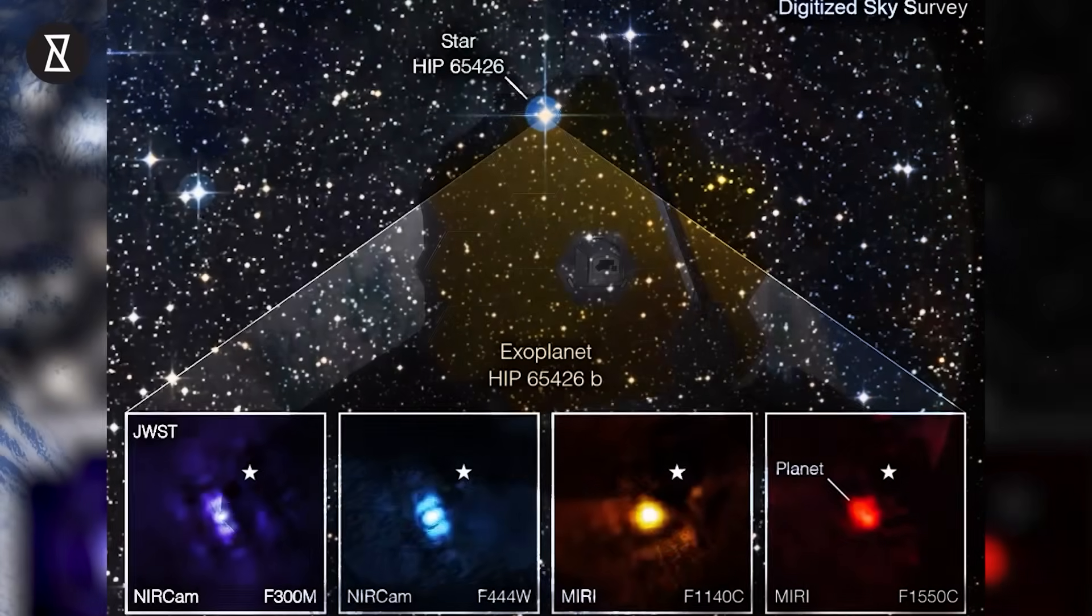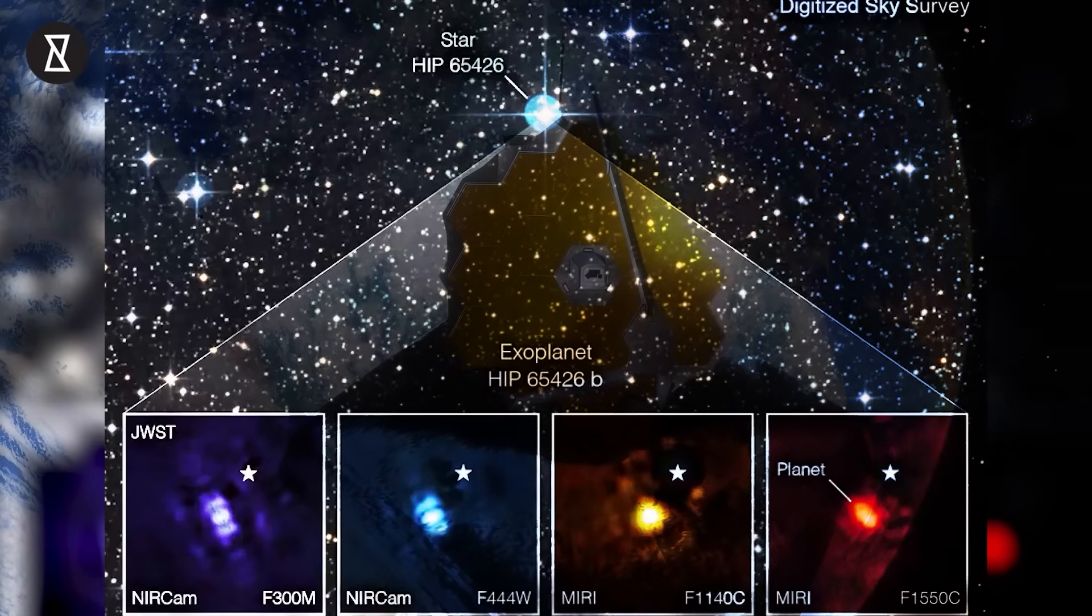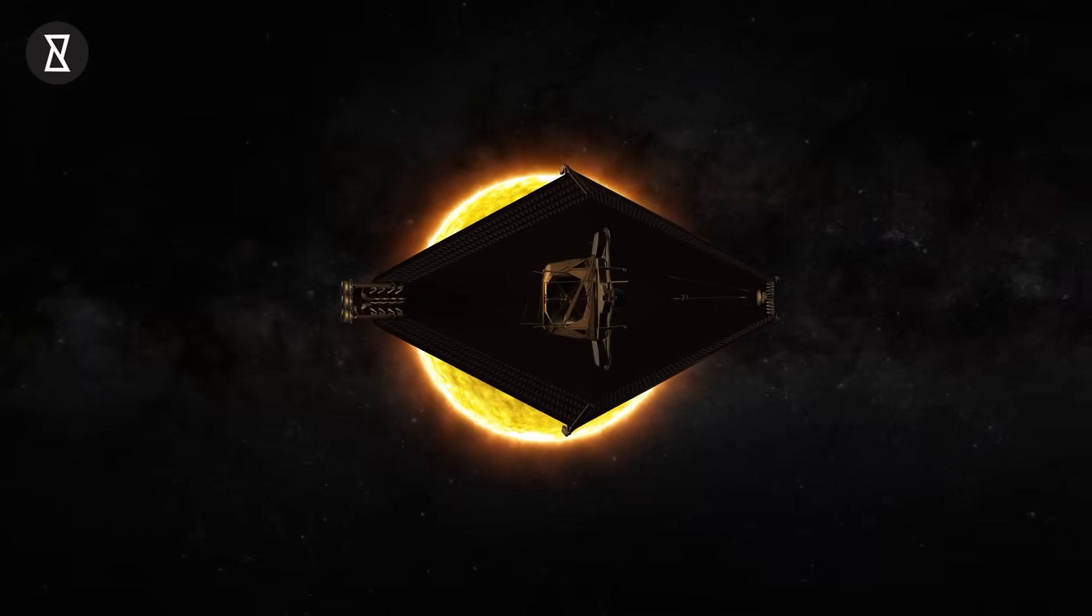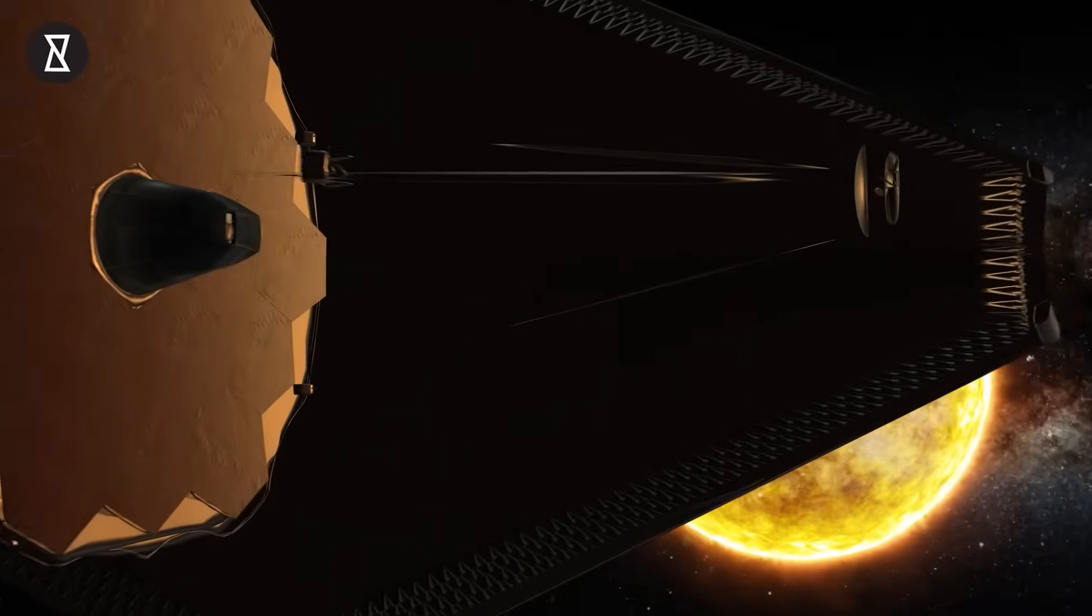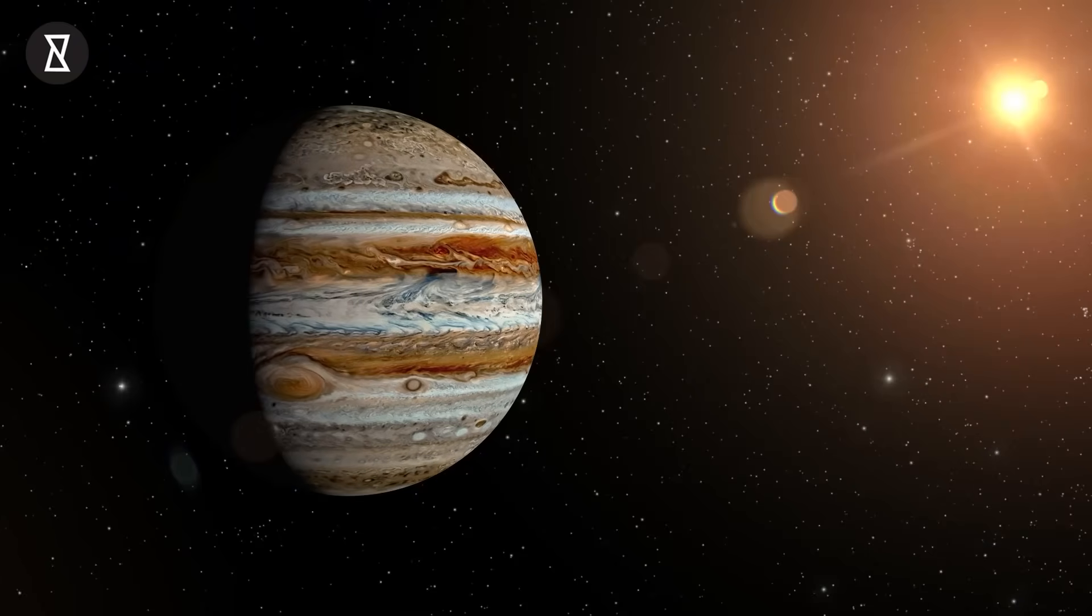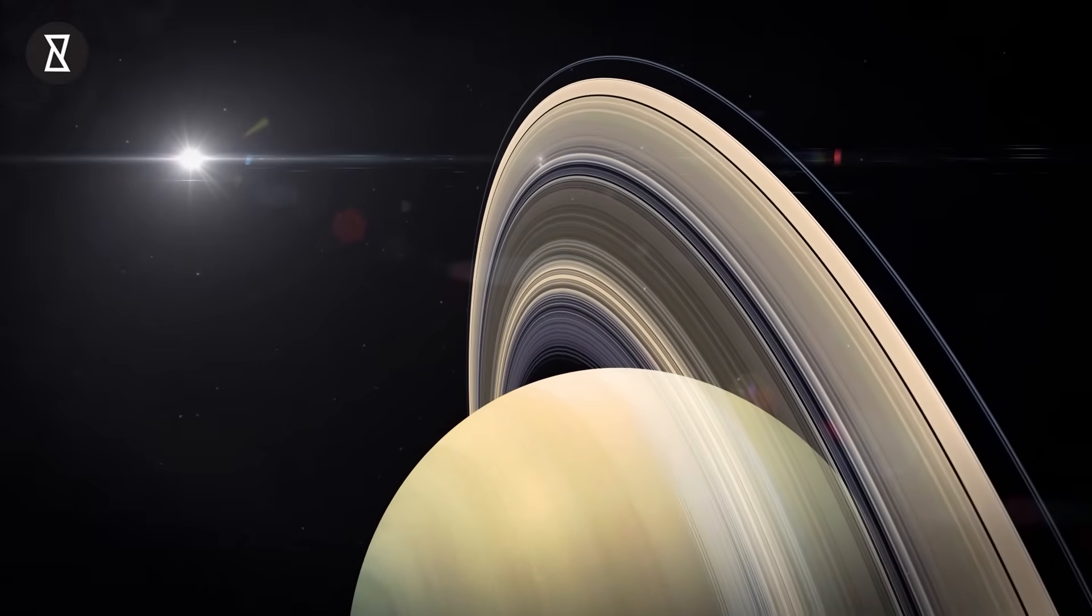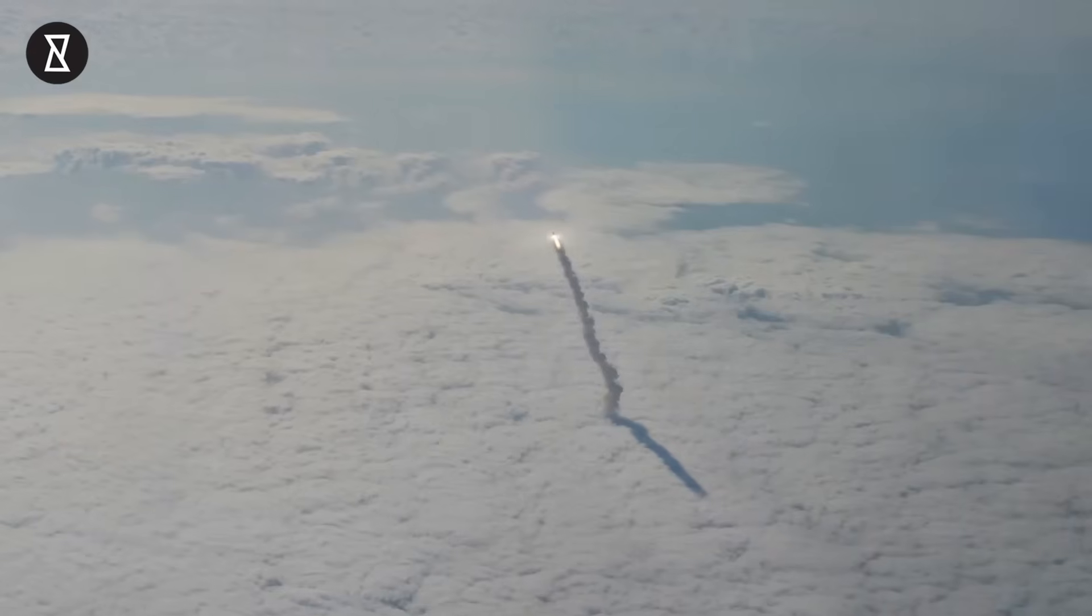The observations of this planet is just the first sign of what JWST can do in imaging planets around other stars. The incredible precision of the imaging data suggests that Webb will be able to obtain direct observations of planets smaller than previously expected. Rather than being limited to planets more massive than Jupiter, it should be able to see planets comparable to, or even smaller than Saturn. This is a really exciting time.